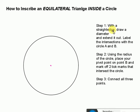So the first thing I want to do is I want to take my straight edge and draw a diameter. And I'm going to extend the diameter out and label the intersections A and B.